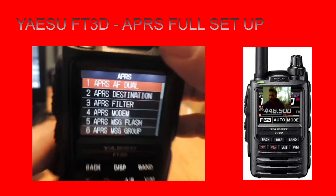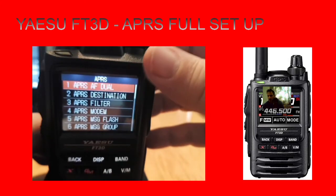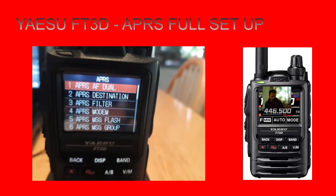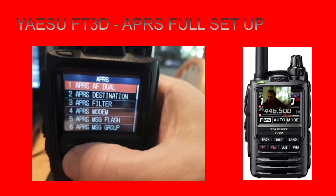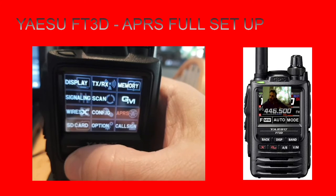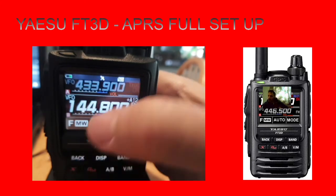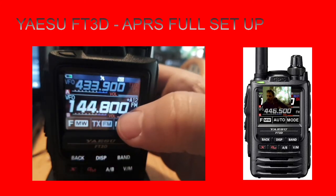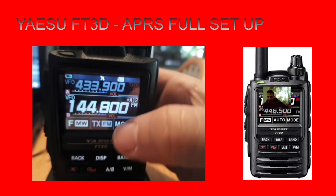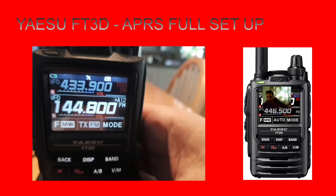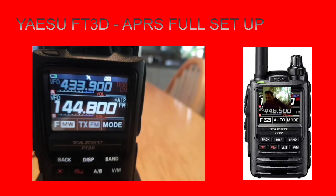So that's all of the settings. I'm going to grab my Kenwood, go back into the normal menu. We're on APRS on the B Band here. I'll grab the Kenwood and we'll transmit from the FT3D to the Kenwood.